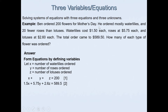The third condition states he ordered 20 fewer roses than lotuses, meaning lotuses is 20 more than roses. So our third equation is z = y + 20. Equivalently, y = z − 20. Either form gives the same answer.